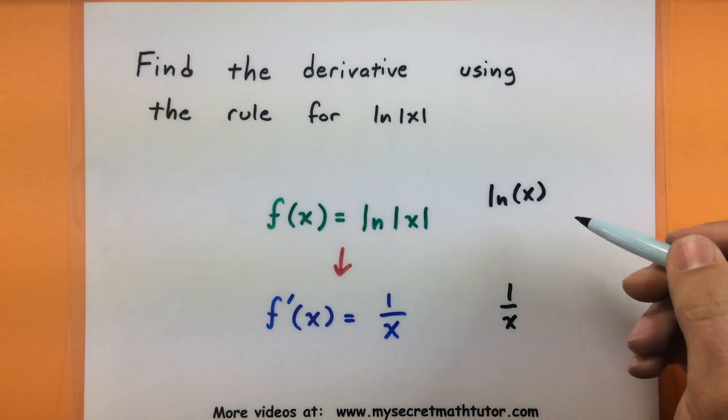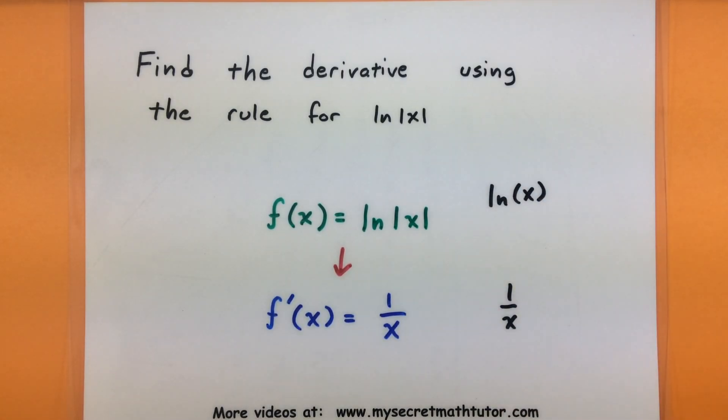The only difference in this case is if we're just dealing with natural log of x, it's implied that we're only dealing with positive x's. Which means when we look at its derivative, the derivative is still 1 over x, but again we're only dealing with positive x's in that case. No negatives are really playing a part in that instance. So let's get into some examples and see how this rule works.